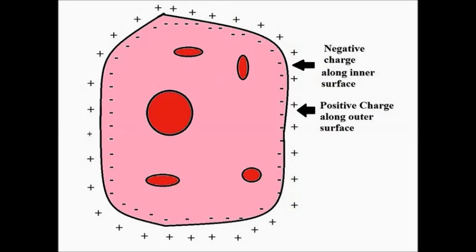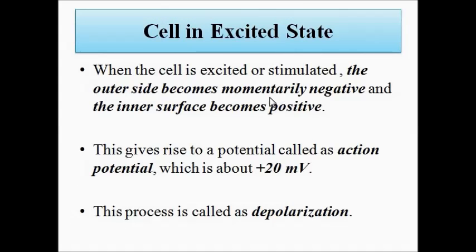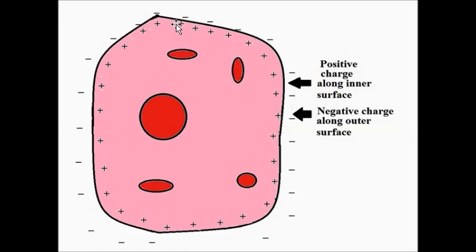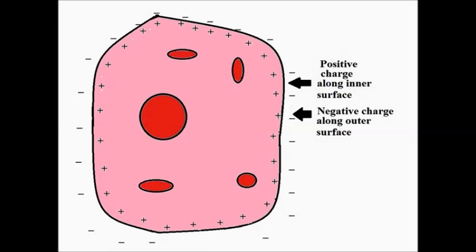When there is any physical activity — any movement of the muscle groups such as movement of legs, hands, shoulders, or other body parts — there is contraction and expansion in the muscle groups. This results in migration of charges: the outer side becomes momentarily negative and the inner side becomes positive. This redistribution of charges through the semipermeable membrane produces an electric potential called the action potential, and the process is called depolarization. This action potential associated with skeletal muscle cells is called the electromyogram.